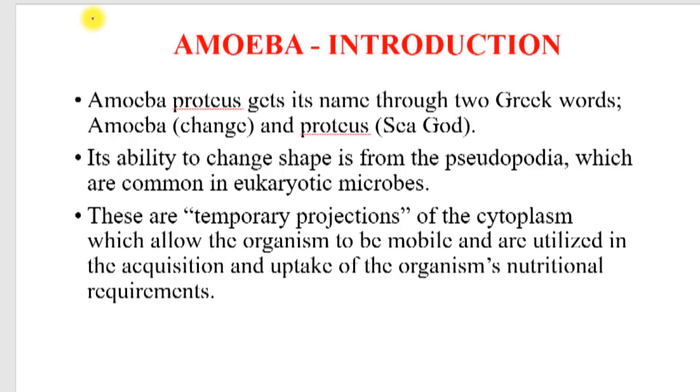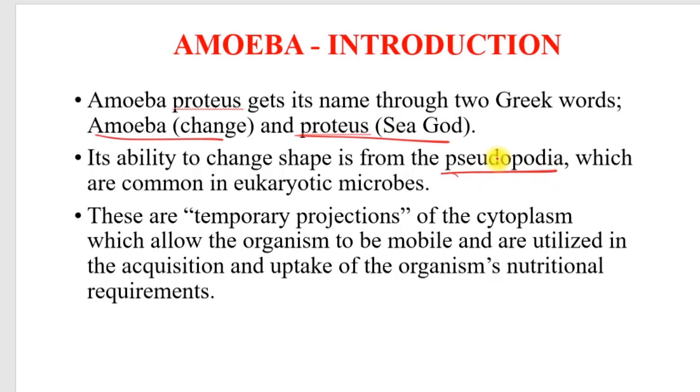By way of introduction, the amoeba gets its name from this particular species: proteus. 'Amoeba' comes from a Greek word meaning 'change,' and 'proteus' refers to a sea god, reflecting its ability to change its form. This comes from the fact that it has pseudopodia, which are common in eukaryotic microbes — temporal projections of the cytoplasm that allow the organism to be mobile and are used in the acquisition of food.